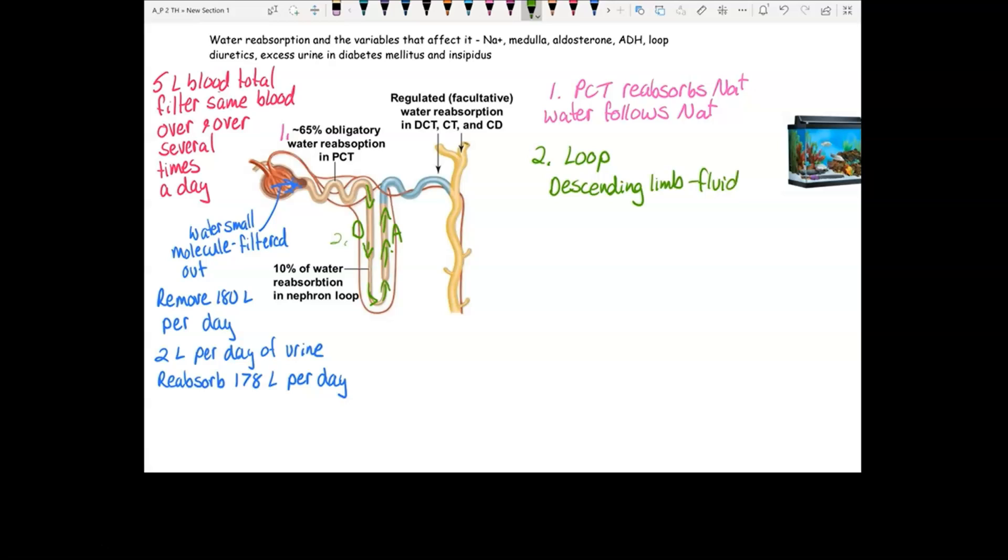The descending limb is where the fluid is going down. That's why it's called descending. And the ascending limb is where the fluid is going up. Blood flow is the opposite direction. The blood is going this way. So the blood and the fluid flow in opposite directions of each other. This is called counter current flow.